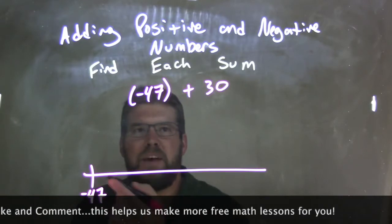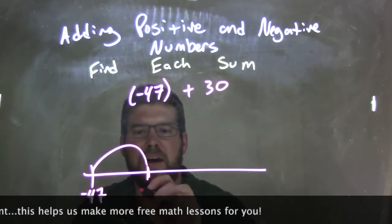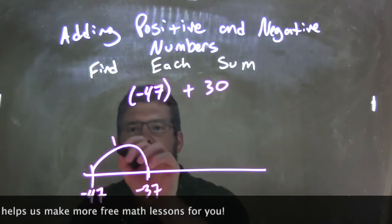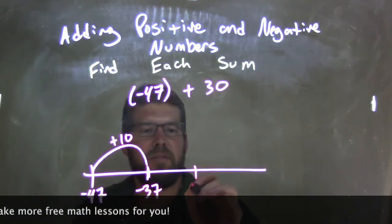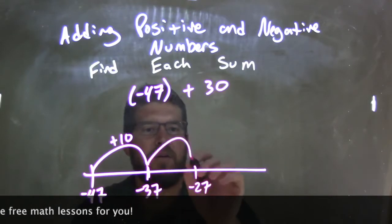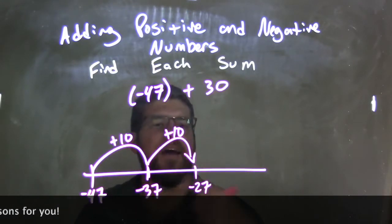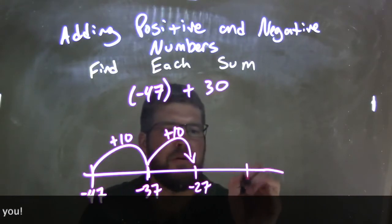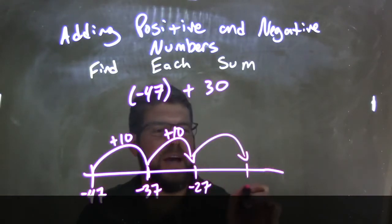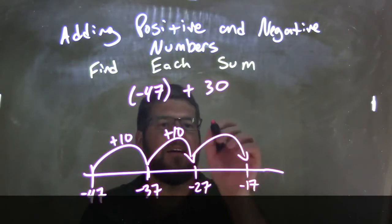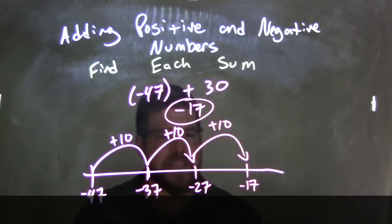That's a plus 10. Another 10 units: negative 27. That's another plus 10 — we're almost there. One more plus 10 and we'll get to our answer. We jump again: negative 27 plus another 10 is negative 17. And that is our final answer: negative 17.